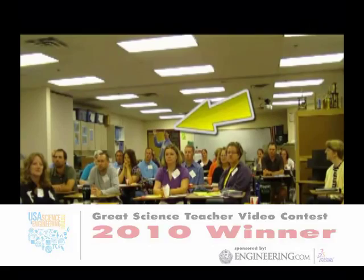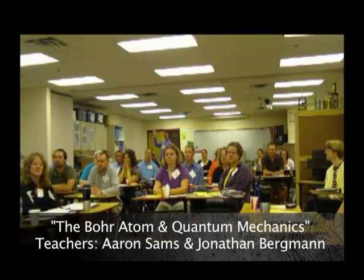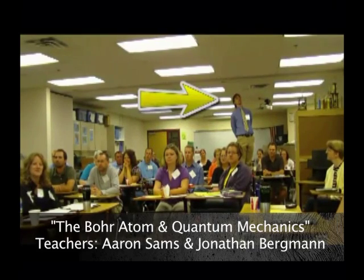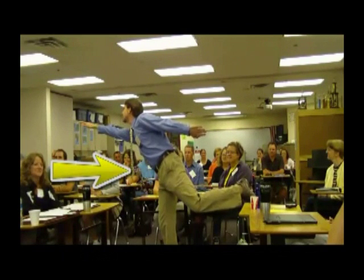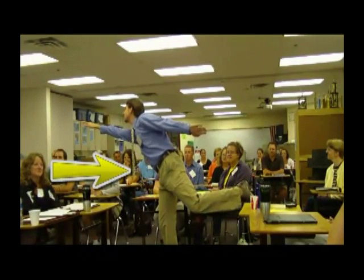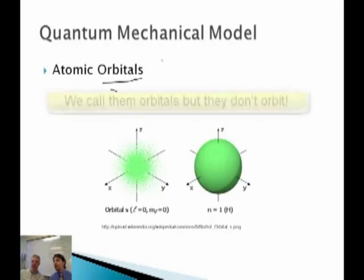There he is! He's there in the back of the room! How did he get from there to there? How did he get to there? Must have to do with quantum mechanics. So, in the quantum mechanical model, what we've got is these things called atomic orbitals.